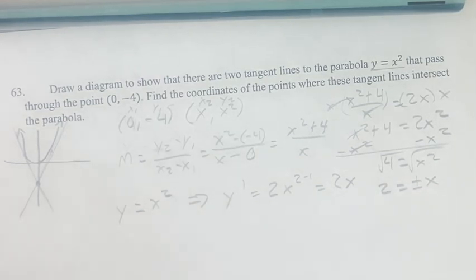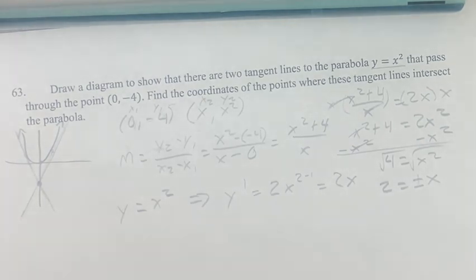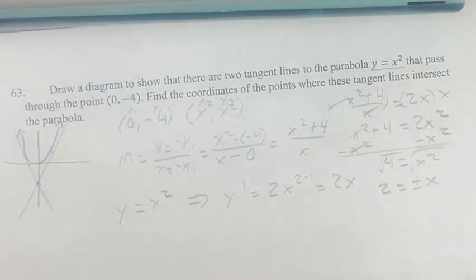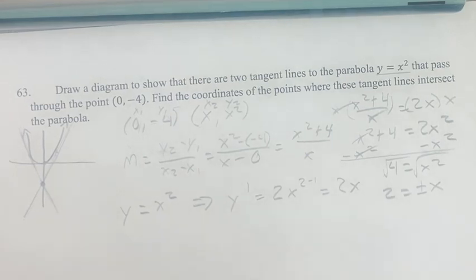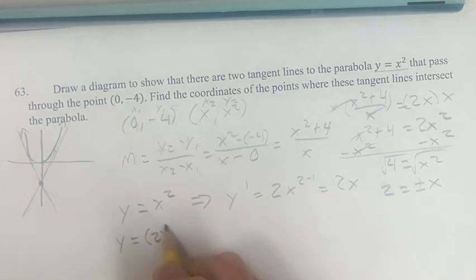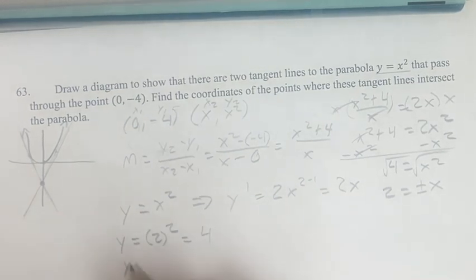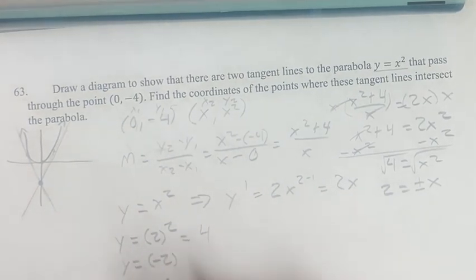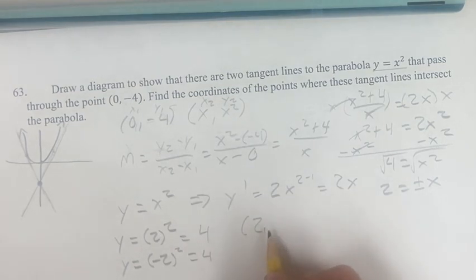Knowing this, we now know the x values of the points being intersected by these tangent lines. We can quickly find the y values by plugging them into the equation. If x is 2, y equals 2 squared equals 4. And if x equals negative 2, y equals 4. So our two points are (2, 4) and (-2, 4).